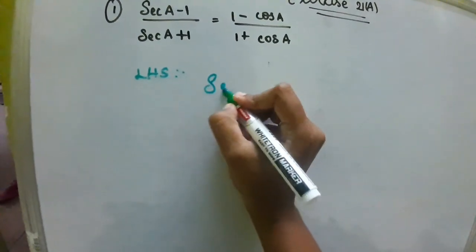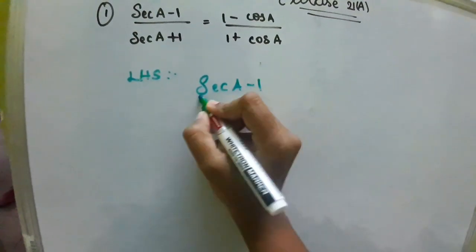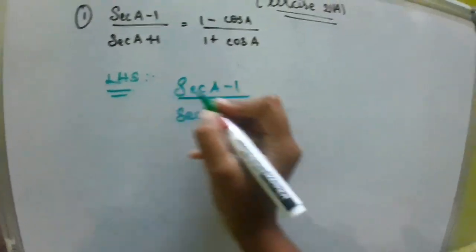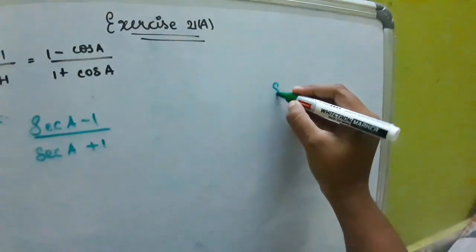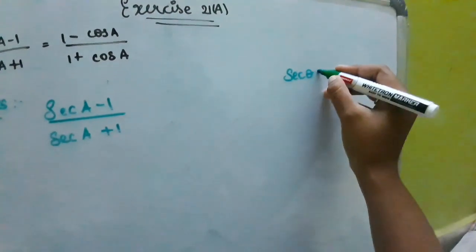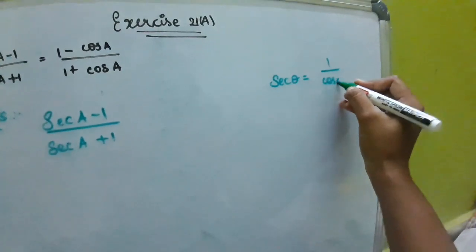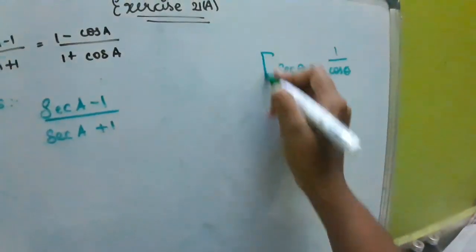LHS is sec A minus 1 divided by sec A plus 1. We know the secant formula already, that is sec theta equals 1 by cos theta. This is the formula, simple, we know it.